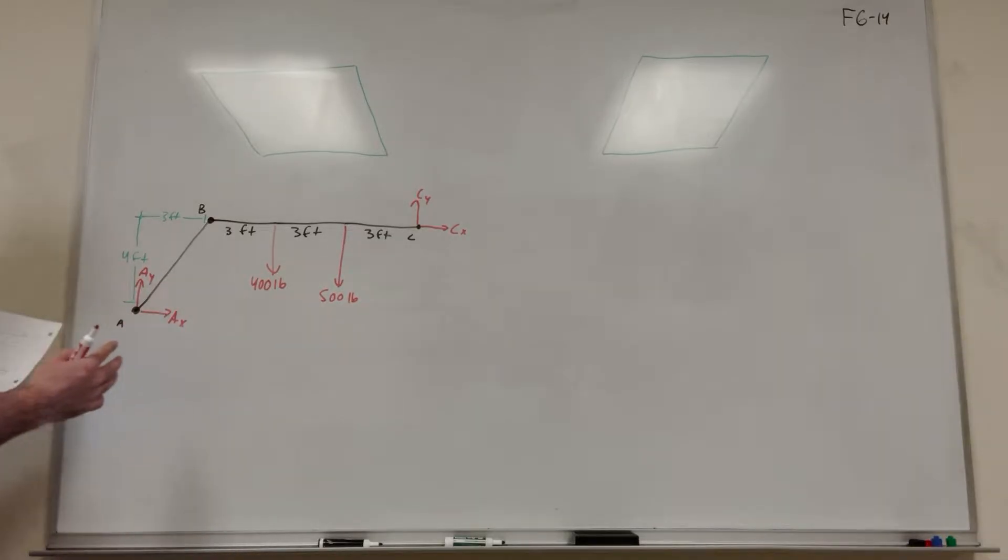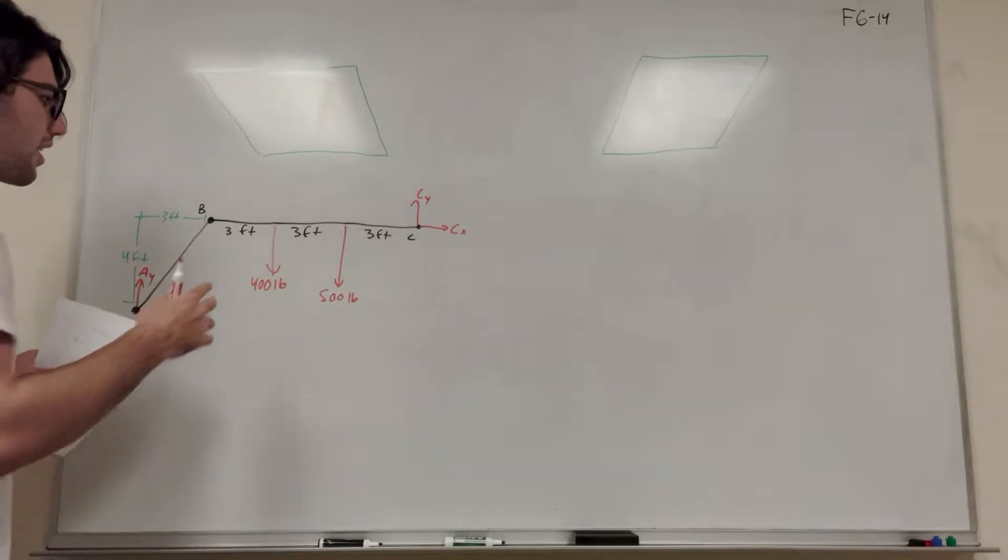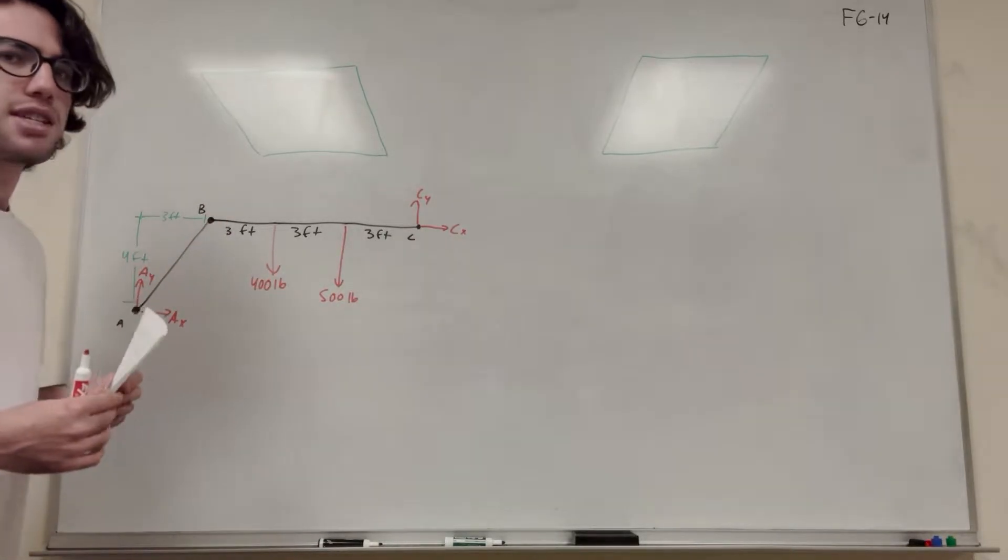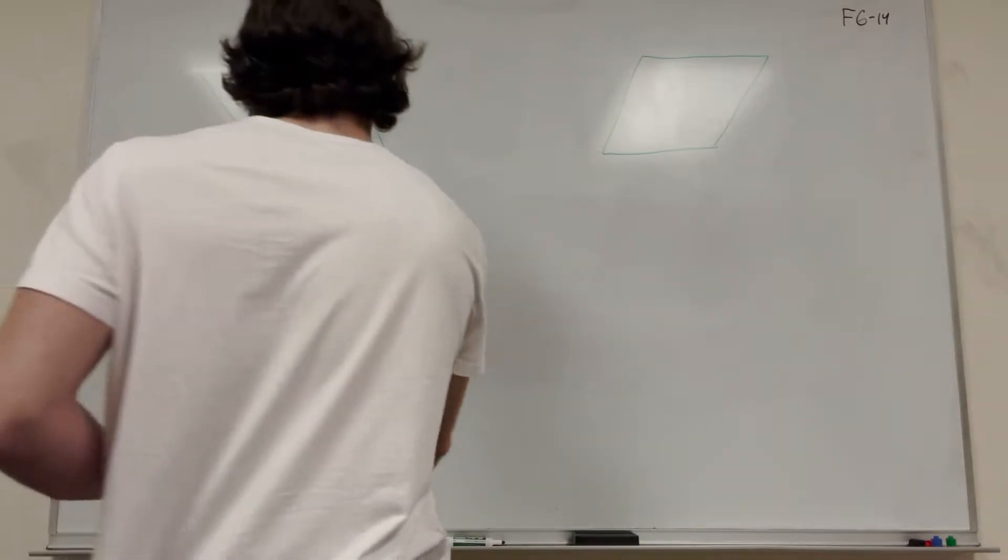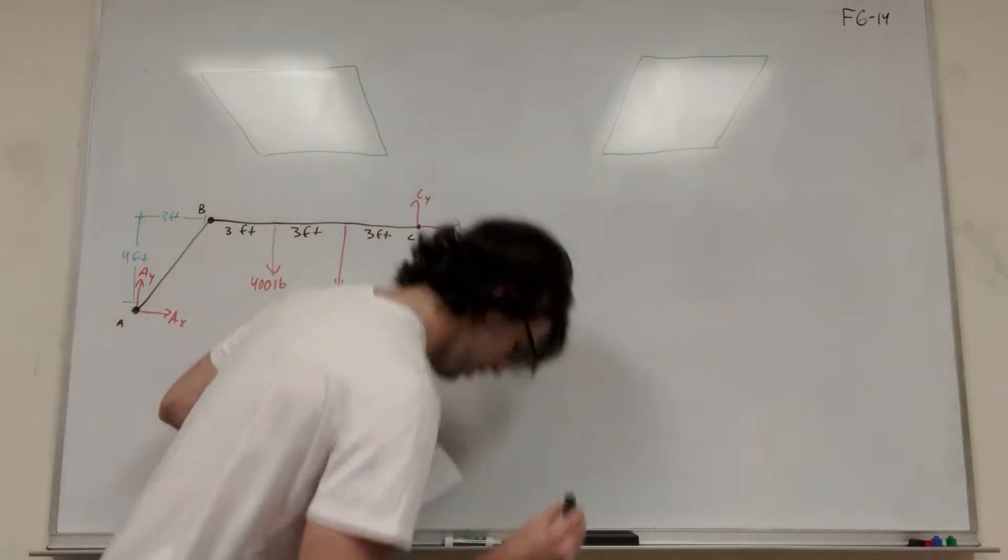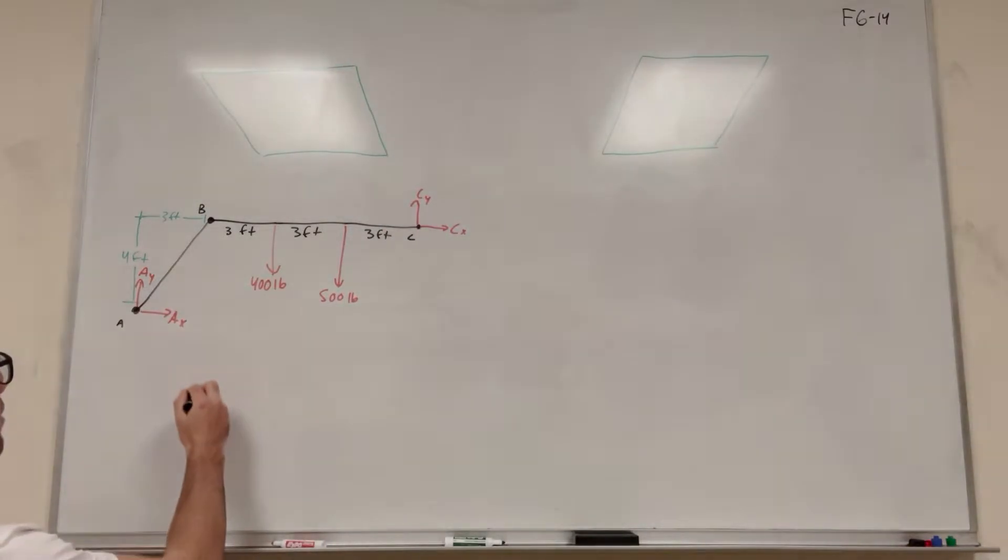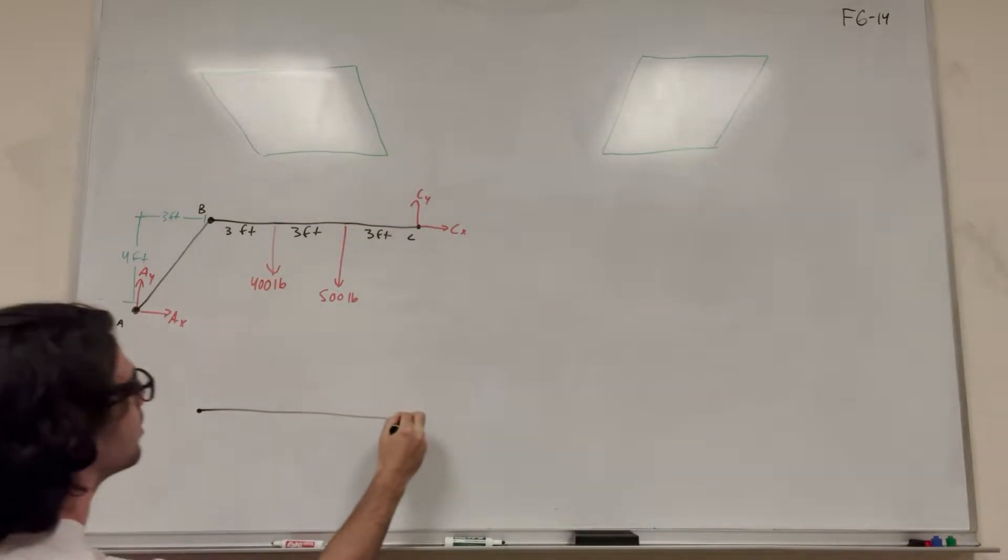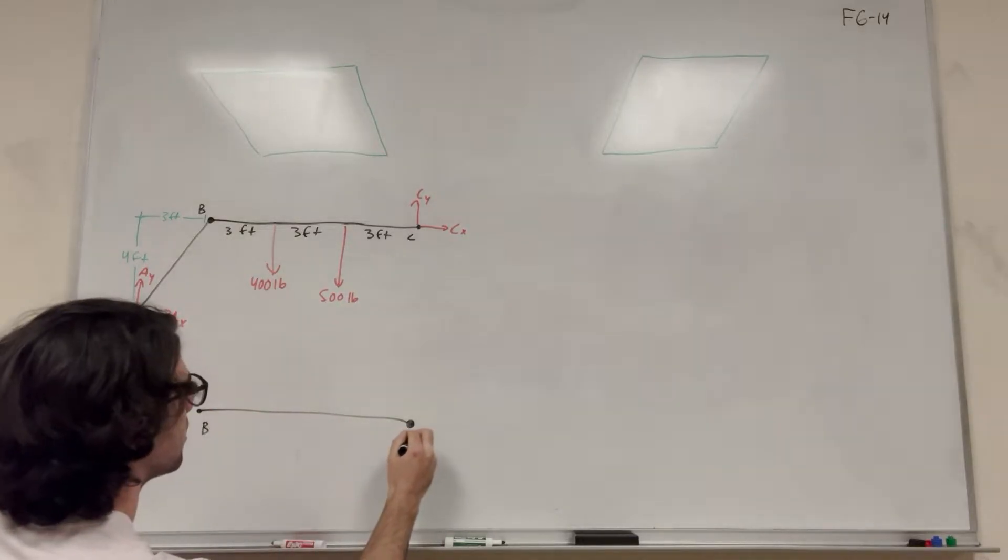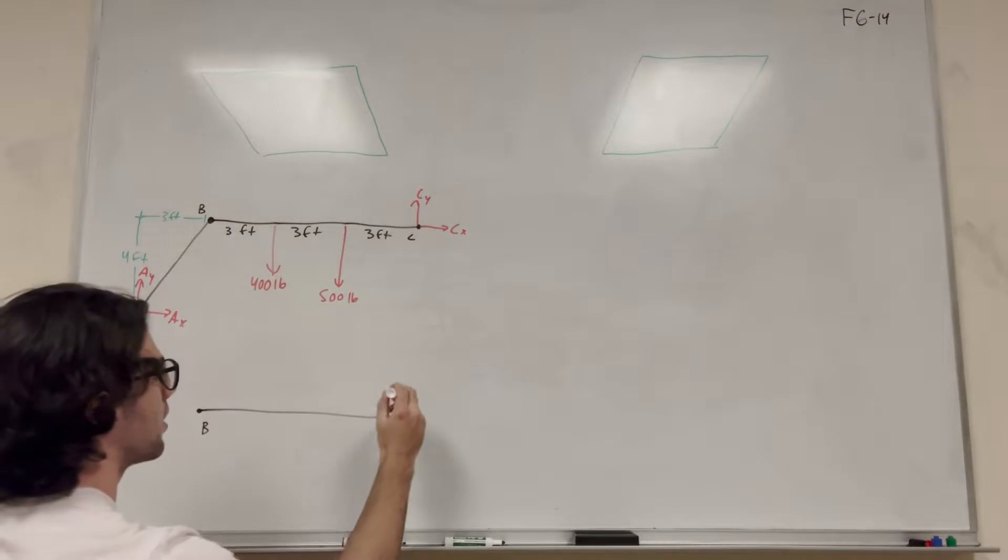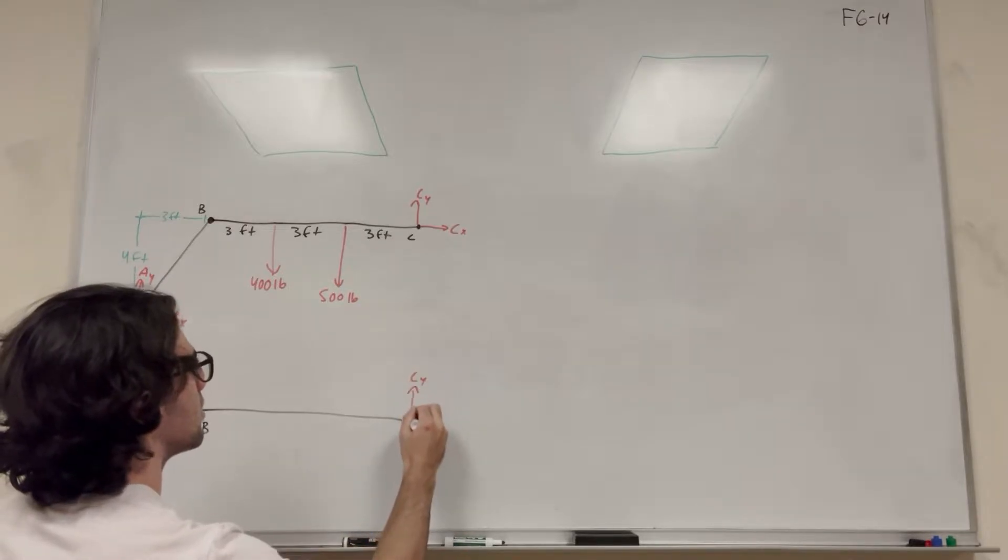So what we're going to do is just look at this beam BC. If we just look at beam BC it's going to become a lot simpler to do what we need to do. So let's redraw BC just by itself. This is B, this is C. We're still going to have C_Y, C_X.